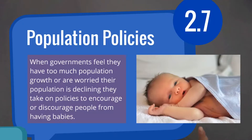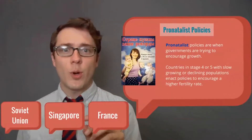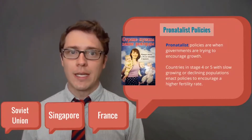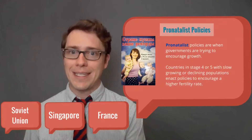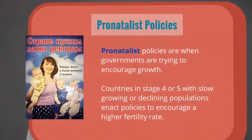That baby right there is my baby — that is Bradley about a month after he was born. The type of policies that governments enact are called natalist policies. We're going to see pro- and anti-natalist policies. Natalist policies are when governments are trying to influence their birth rate.